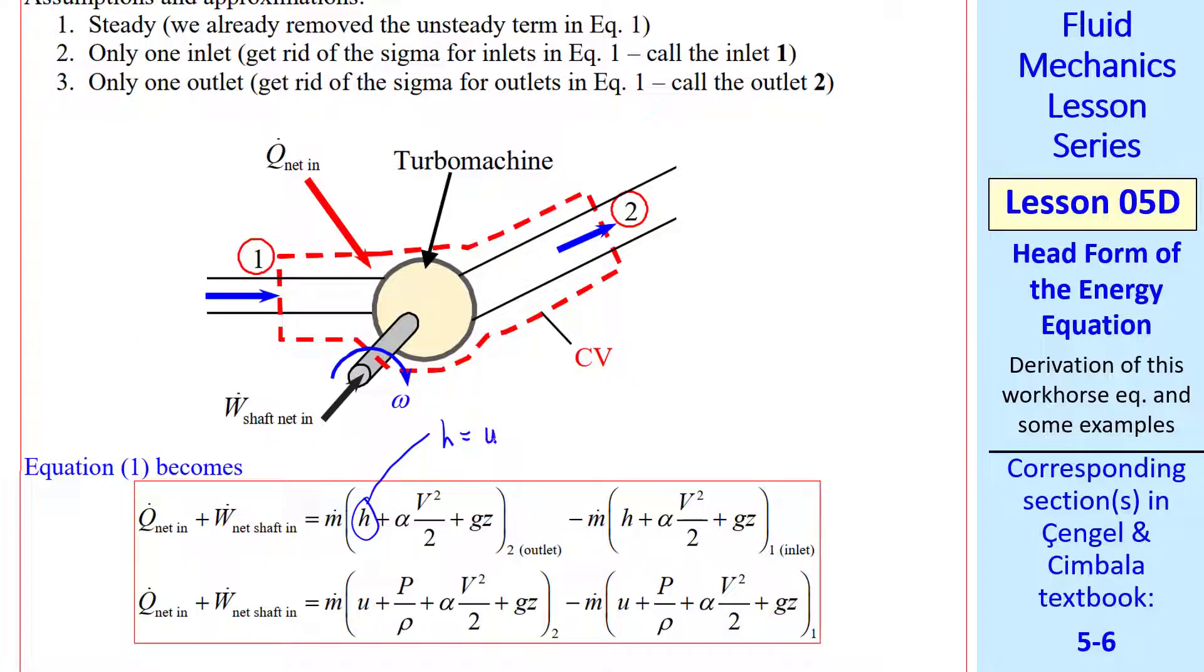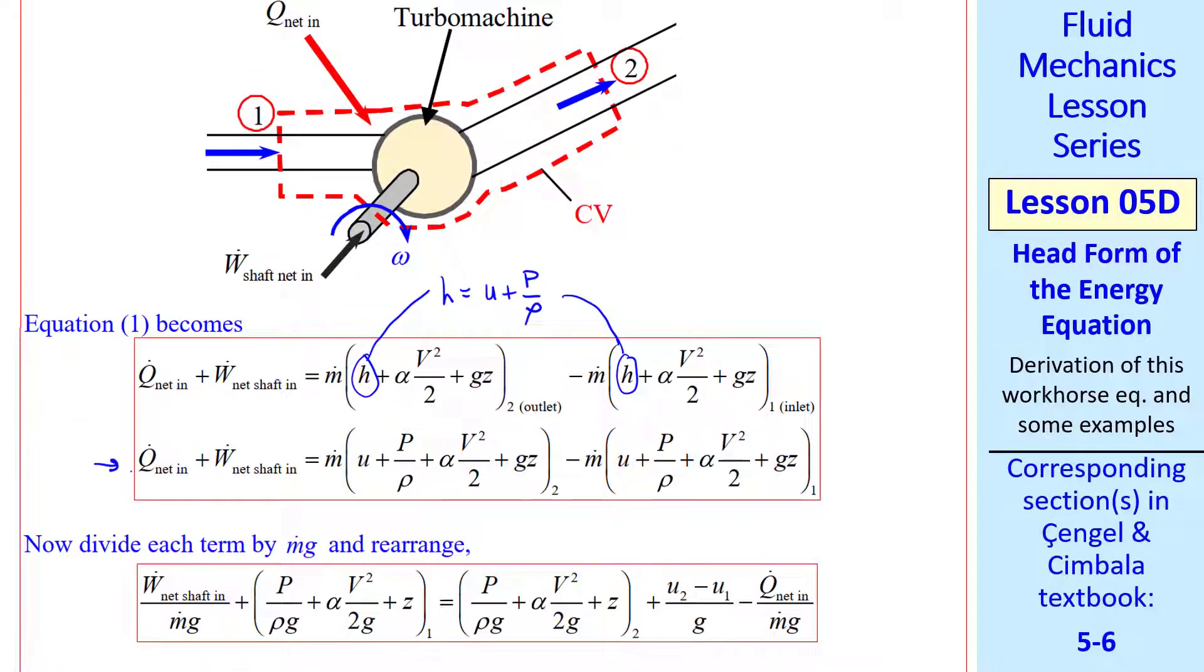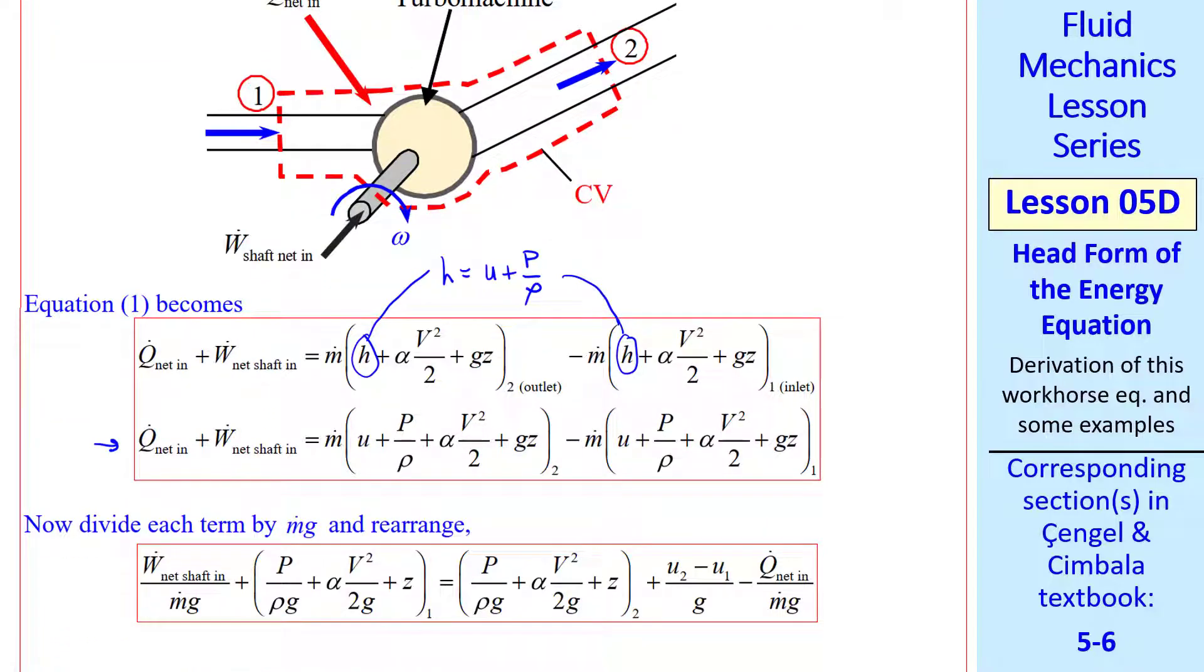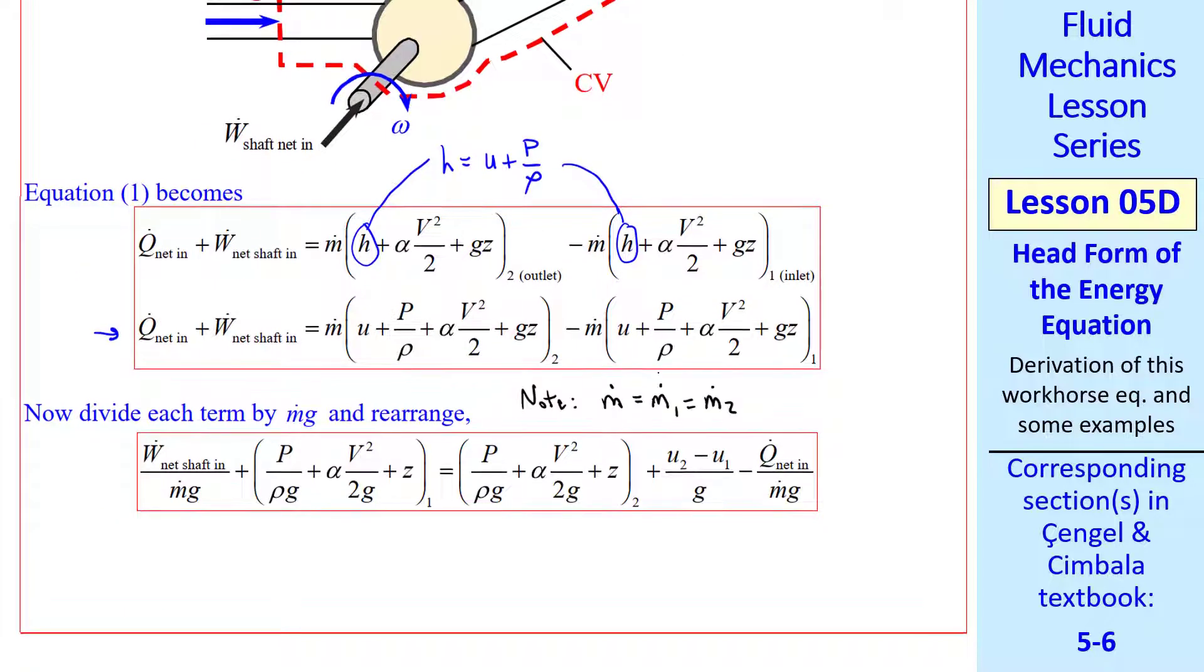Now let's split h back into u plus p over rho, in both places where h occurs. So we get this second equation. To get it into head form, we divide by m dot g. We also rearrange, noting that m dot is equal to m dot 1 and m dot 2, since there's only one inlet and outlet. You can see from these z terms that the dimensions of every term in this equation are that of length, or head. So this is now a head form of the equation.